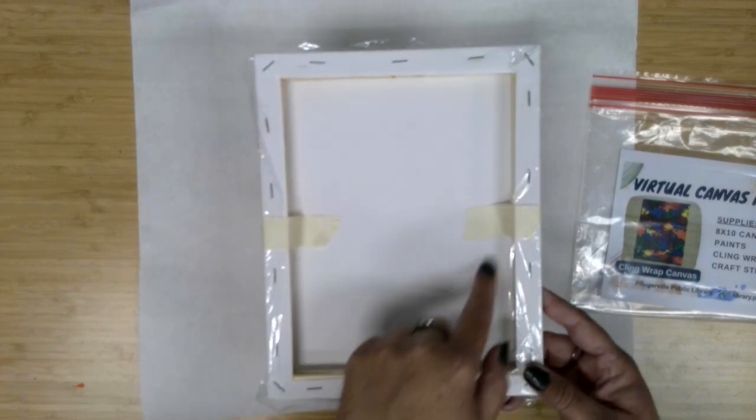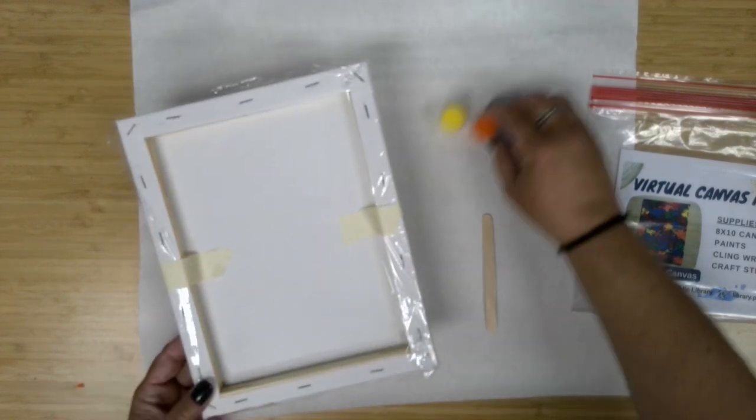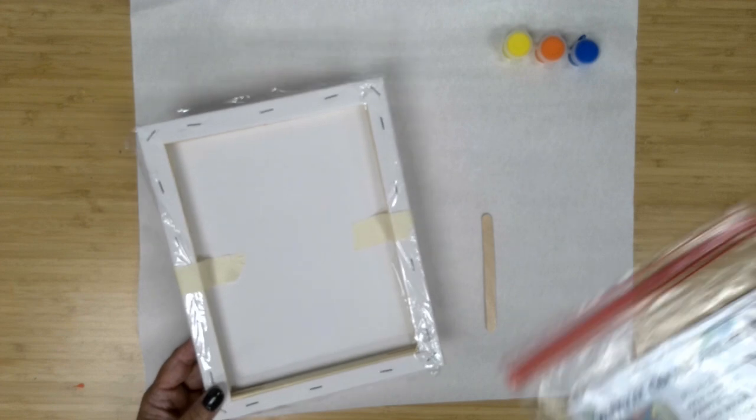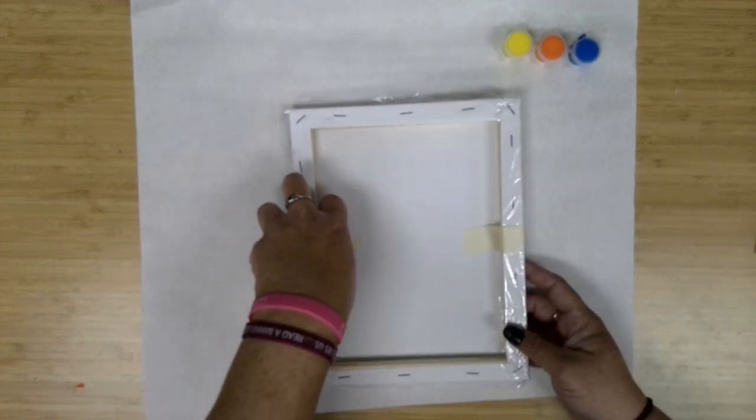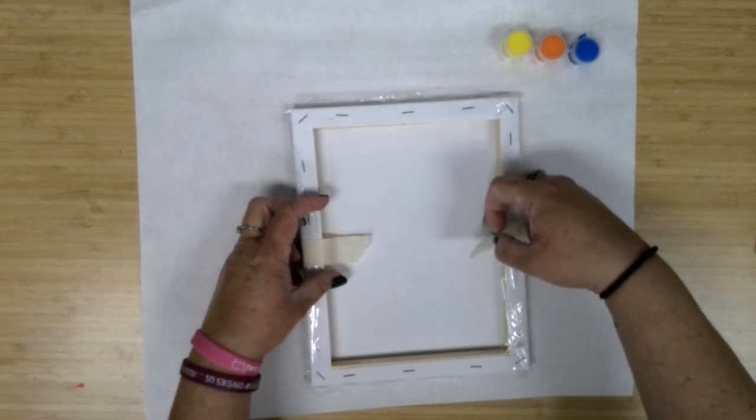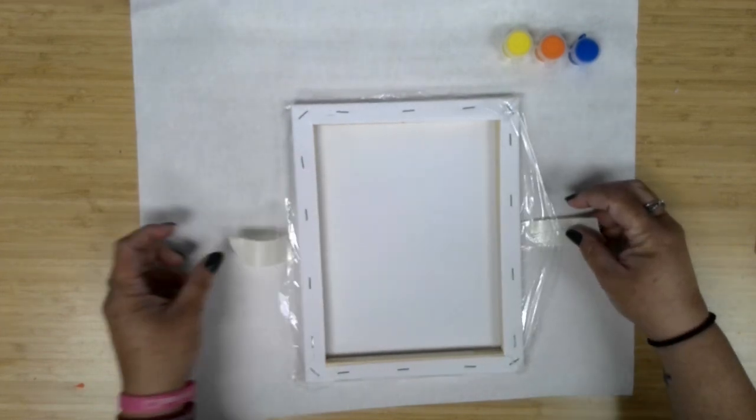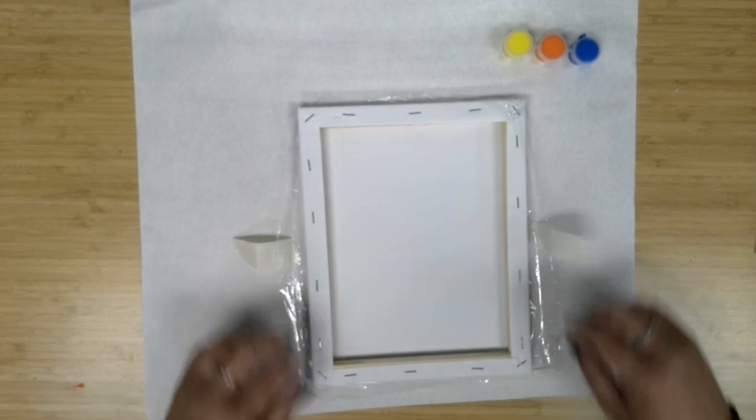And so we'll see I've actually used a little bit of tape in order to get the cling wrap to stick and stay and not hopefully bunch up. So I'm going to slowly remove my two little pieces of masking tape there, bring my cling wrap around.